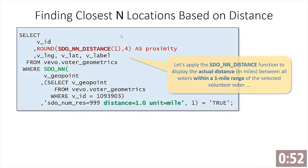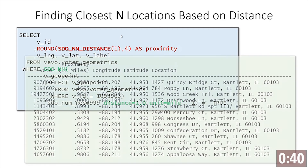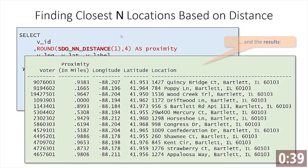Here's a super simple example of some of the things I can do. I can find all voters within a distance of one mile of a particular volunteer voter with a simple function call. And here's the list of the voters — there's their proximity. Google Maps, take that.